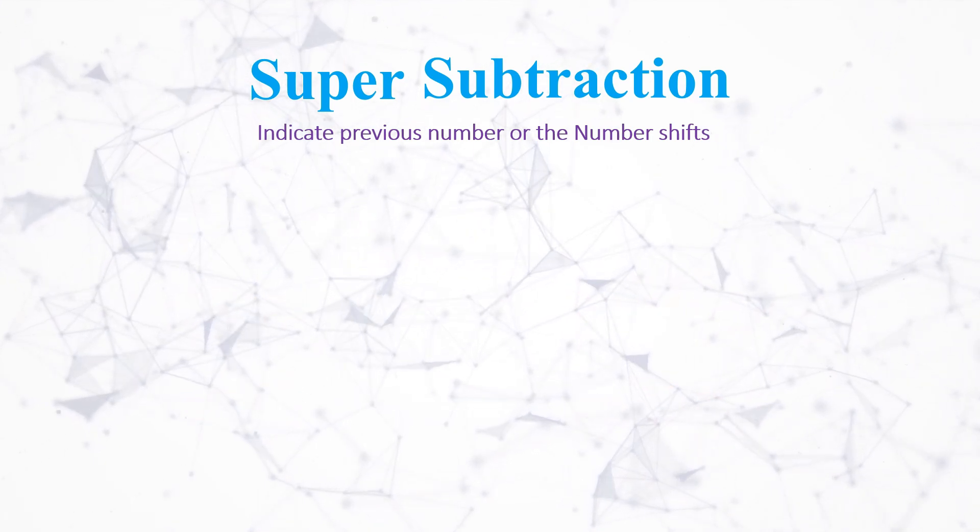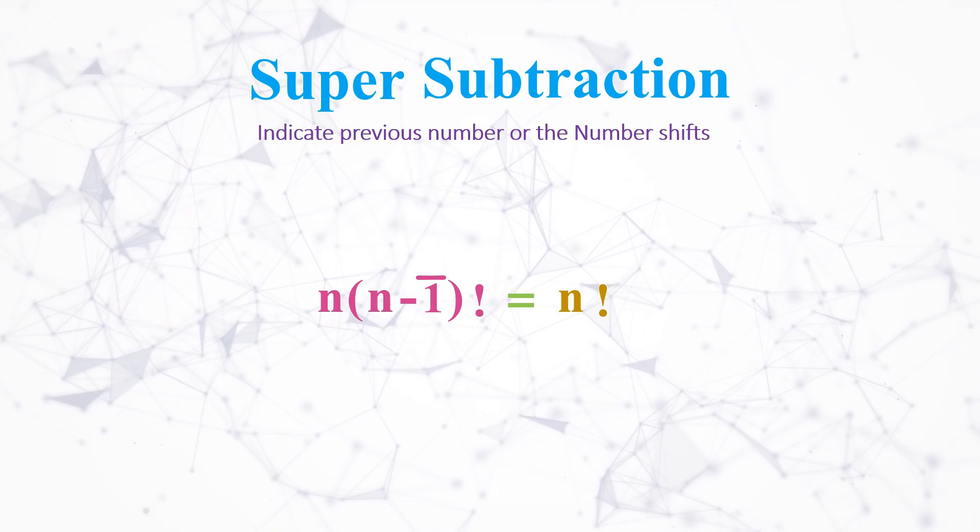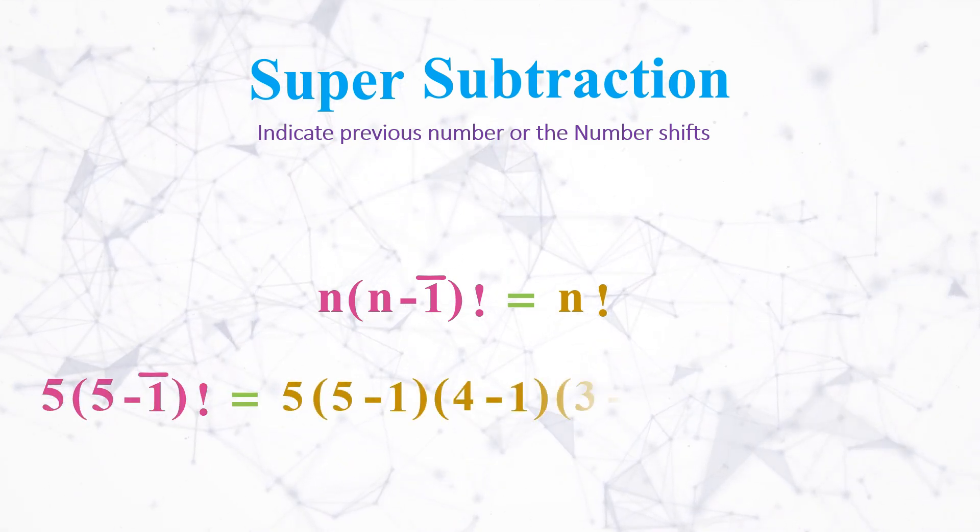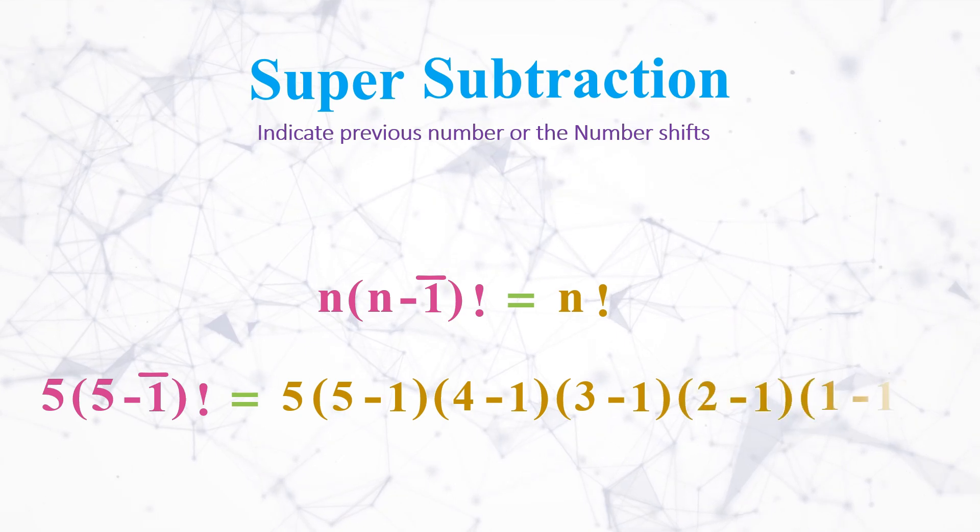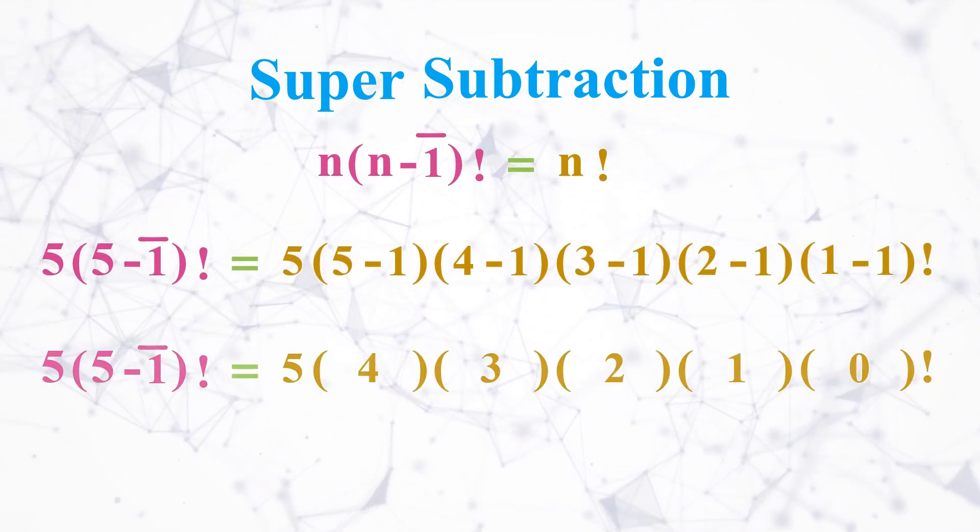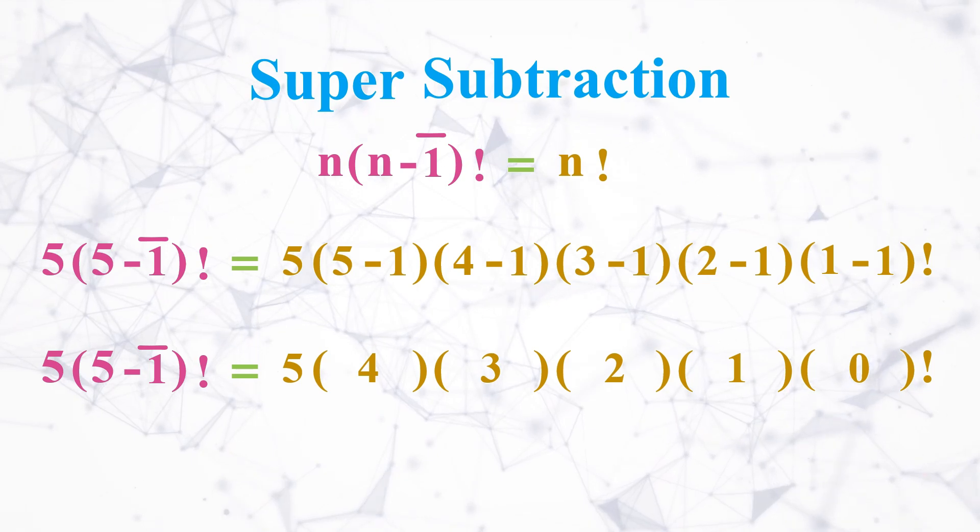For example, n times (n minus 1) factorial. The expected operation is 5 times (5 minus 1), (4 minus 1), (3 minus 1), (2 minus 1), (1 minus 1) factorial, which should work like this and not this operation.